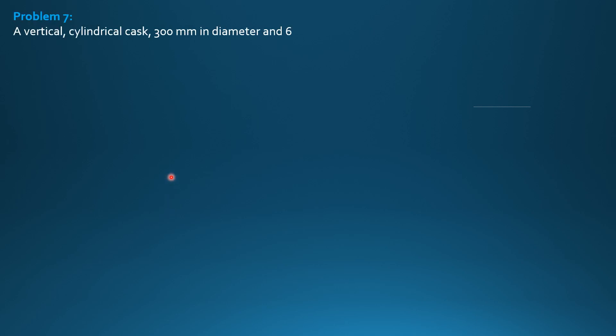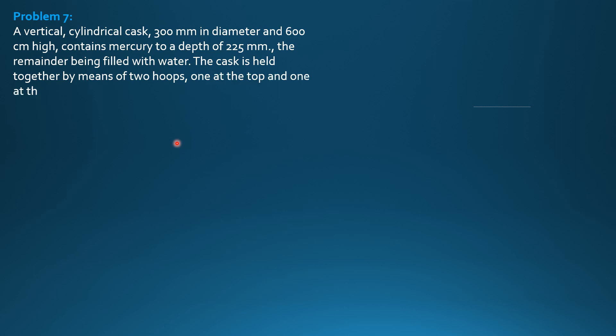A vertical cylindrical cask, 300 mm in diameter and 600 mm high, contains mercury to a depth of 225 mm, the remainder being filled with water.